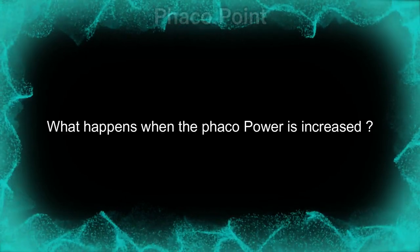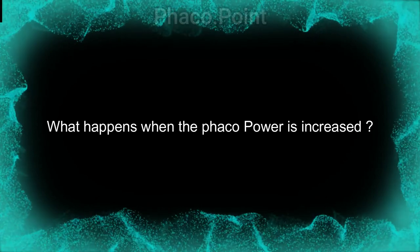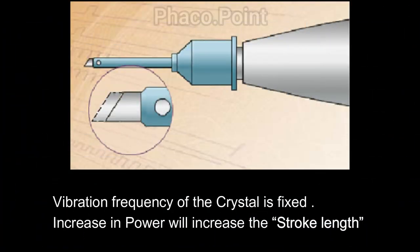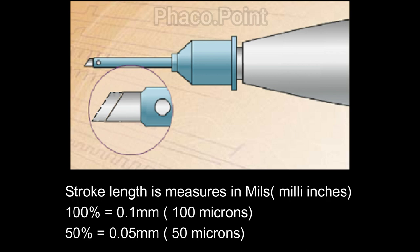Another false belief is that many people think when the FACO power is increased, the vibrational frequency of the crystals will increase — but this does not happen. What really happens is there is an increase in the excursion of the tip, known as the stroke length. At 100% FACO power, the tip moves about 100 microns, and at 50% FACO power it moves about 50 microns, at least in the Stellaris machine. Stroke length is measured in milli inches.